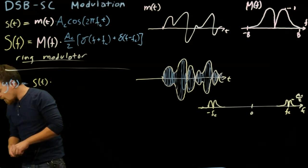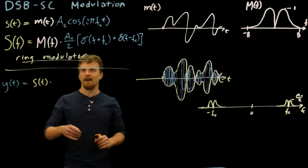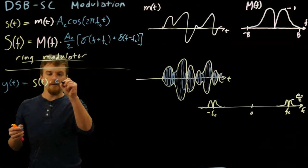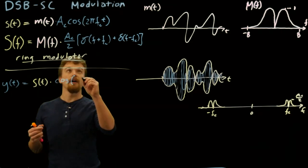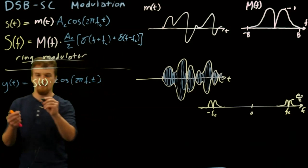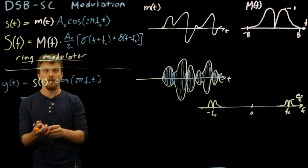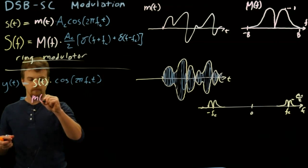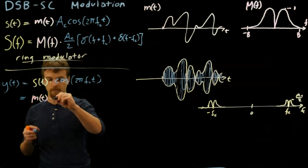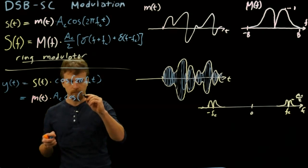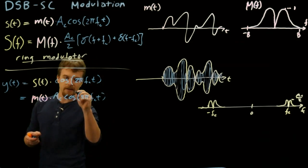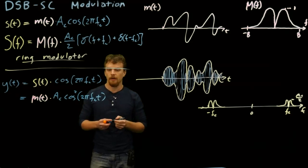We're going to take s of t and multiply it again by the same cosine, except just have it have unit amplitude. So we're going to do s of t times cosine of 2 pi fc again. But remember what s of t is—this is equal to m of t times this cosine times this cosine again, so we can say it's that times cosine squared.